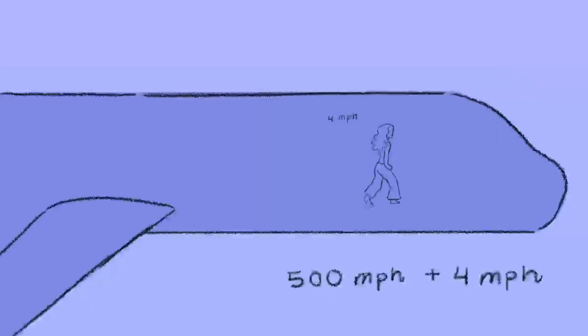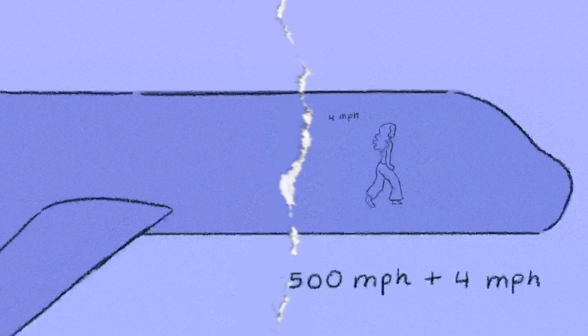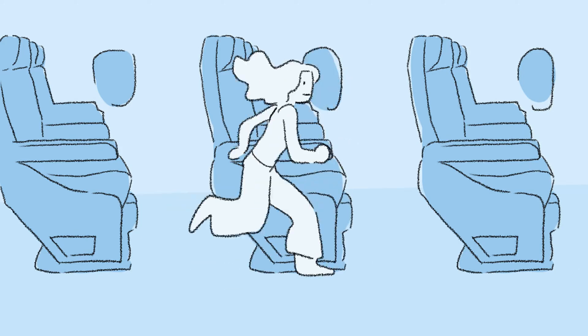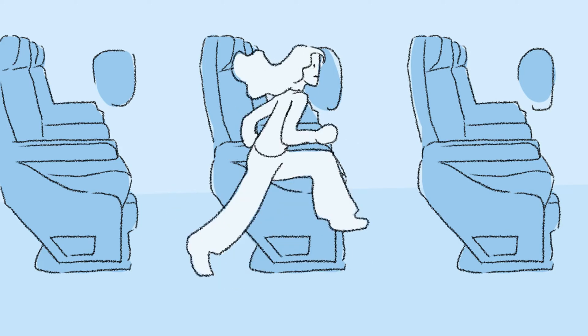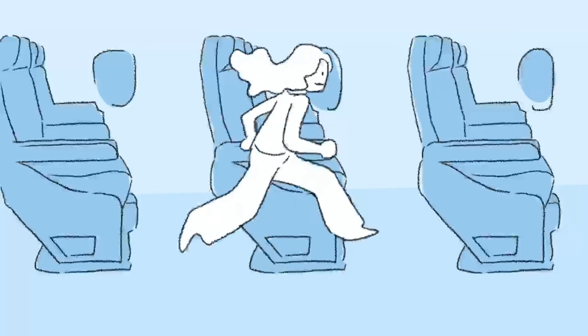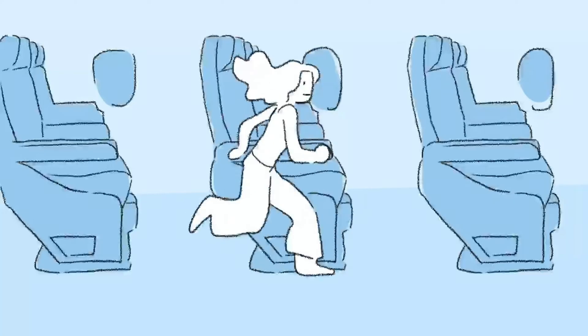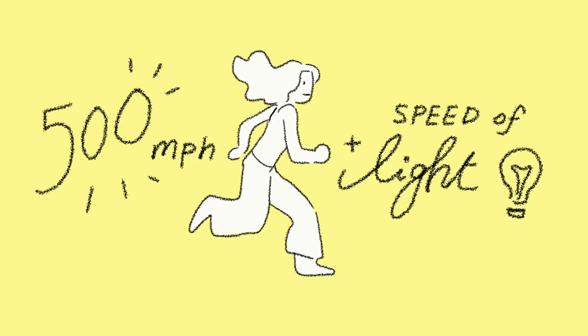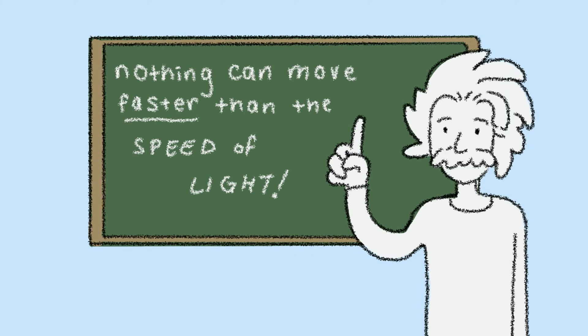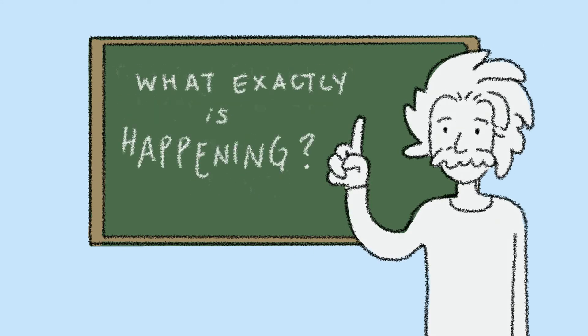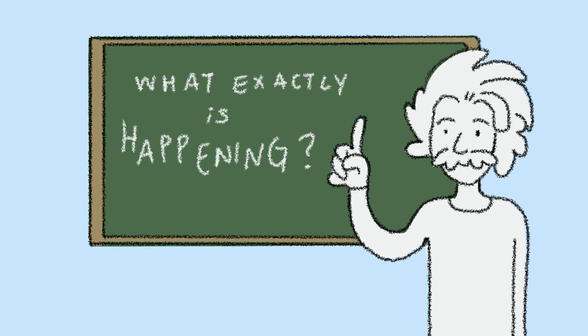Now let's say Daisy needs to pee. She starts running toward the nearest bathroom. She runs so fast, in fact, that she gets close to the speed of light. Based on our previous logic, Rose should see Daisy moving nearly 500 miles per hour faster than the speed of light. But according to Einstein, nothing can move faster than the speed of light. So what exactly is happening?